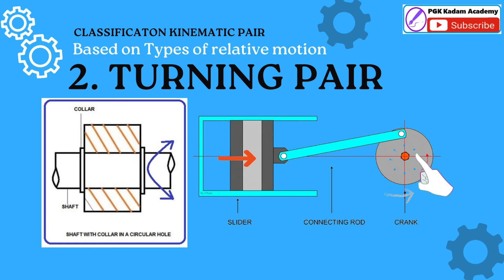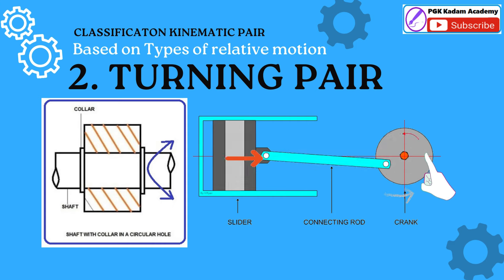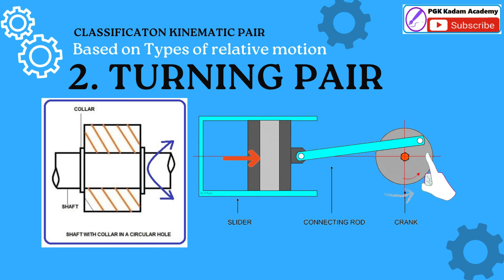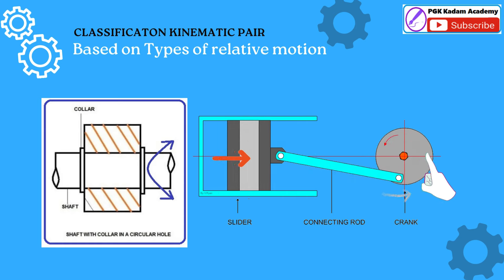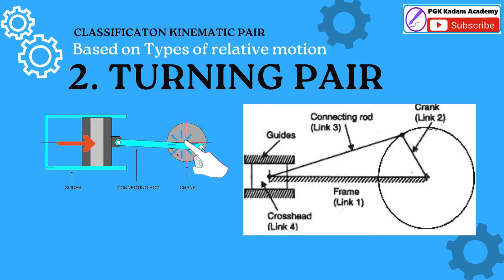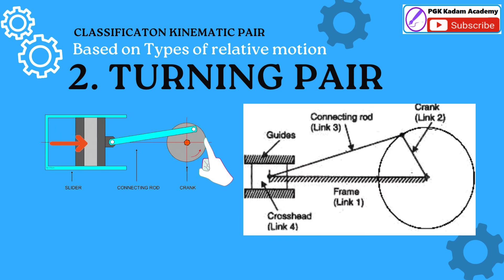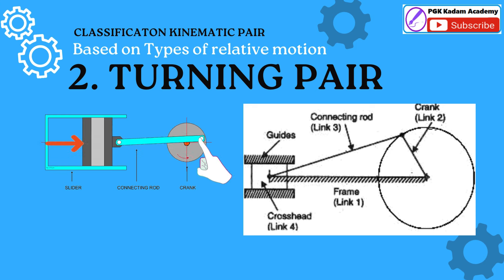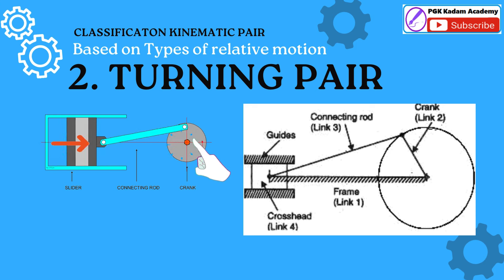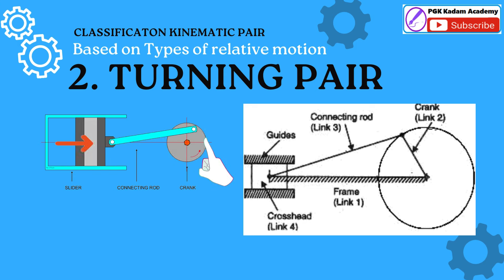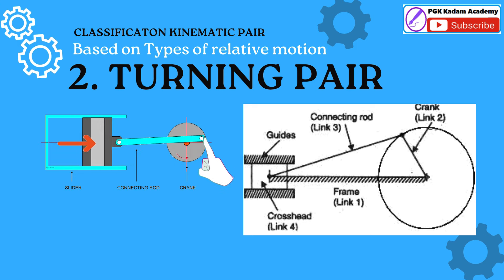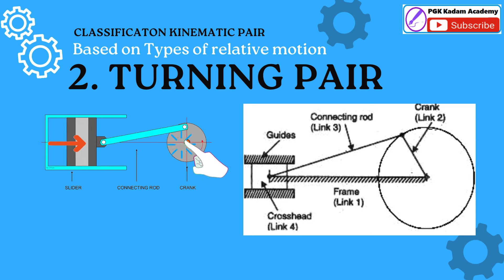The crankshaft of an internal combustion engine turning in a bearing — total three turning and one sliding pair. Crank, link 2, rotates relative to ground, link 1, and forms a turning pair. Similarly, crank (link 2) and connecting rod (link 3), and connecting rod (link 3) and slider (link 4), also form turning pairs.